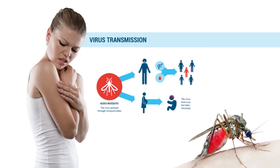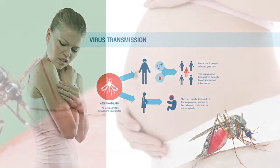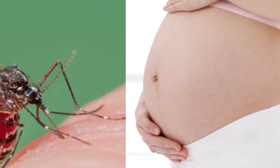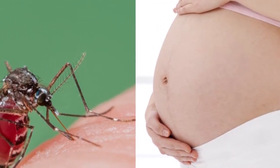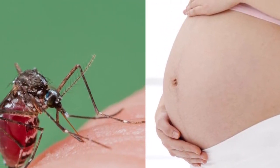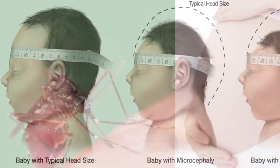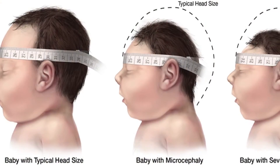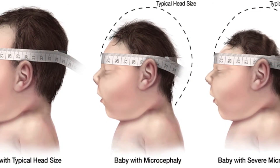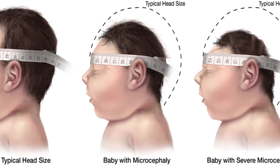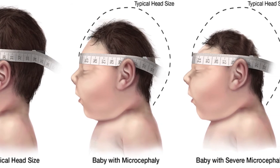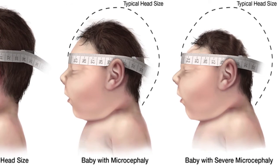The disease may not have serious consequences for adults, but it may be fatal for unborn babies. If a pregnant woman is bit by a mosquito carrying the Zika virus, it can be passed on to the fetus and possibly lead to birth defects such as microcephaly, which is where the baby is born with a small head and brain defects.